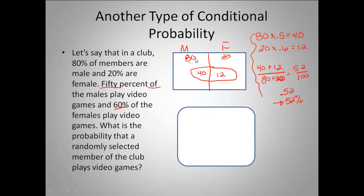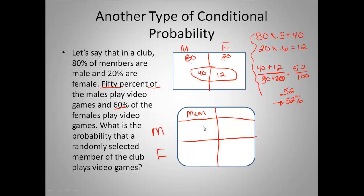We'll start by labeling a chart. Up here I have males and females — this is what we'll call the exhaustive piece, meaning it fills the entire sample space. Everybody in this club is either male or female. For males, 80% or 0.8 of the members are male, and for females it's 0.2. Then for the video games column: 50% of males play video games, so 0.5, and 60% of females, so 0.6.